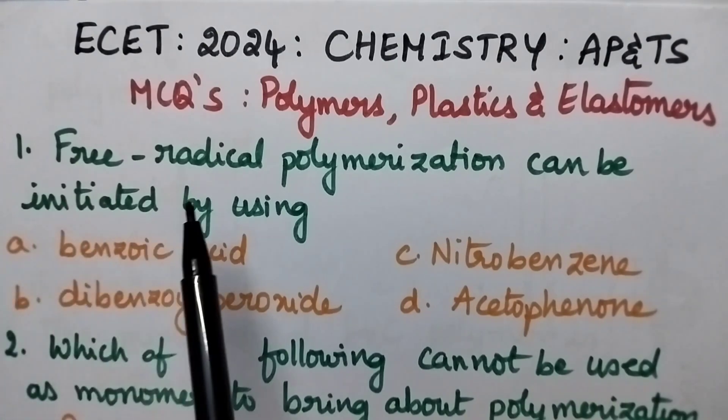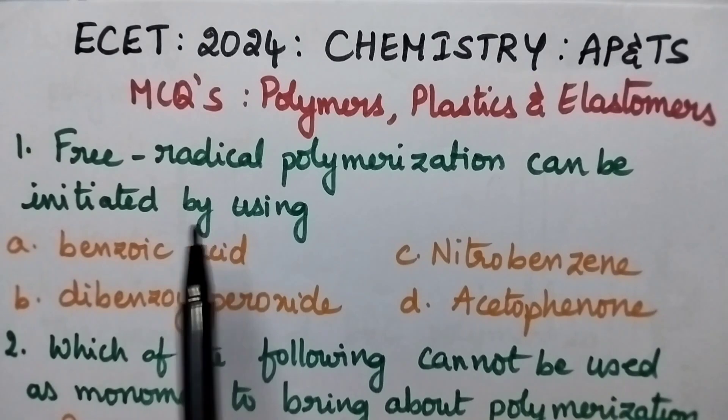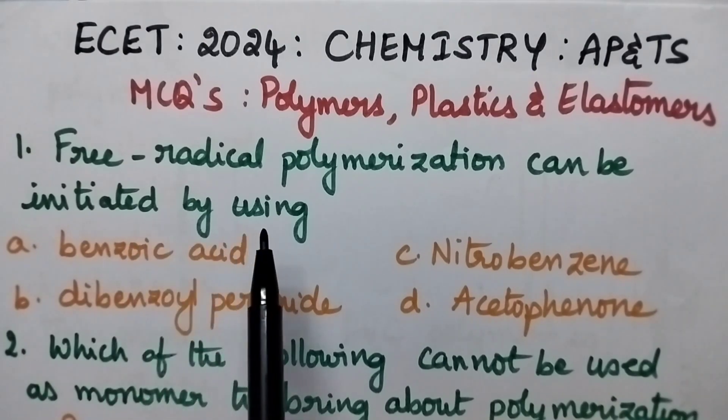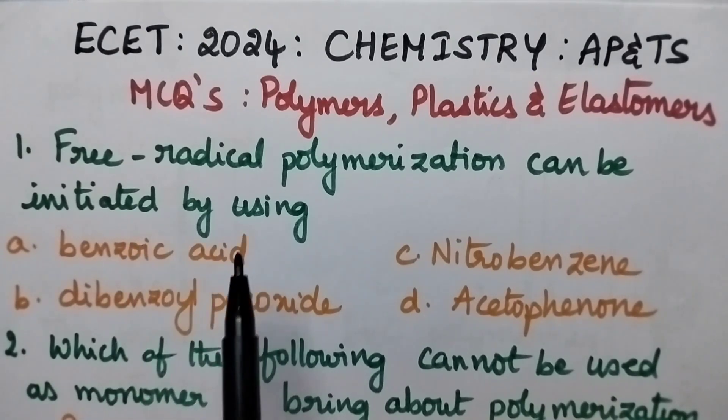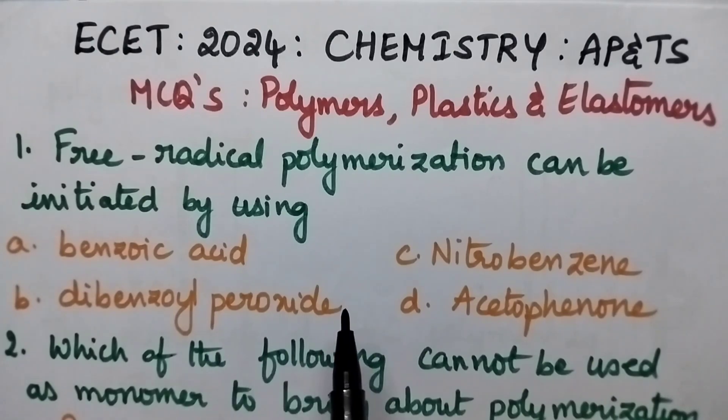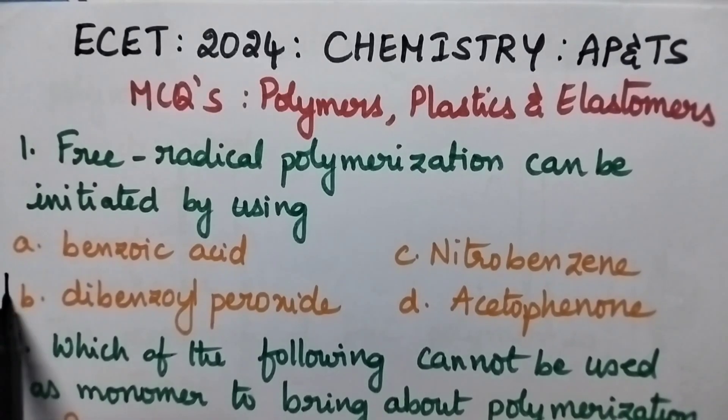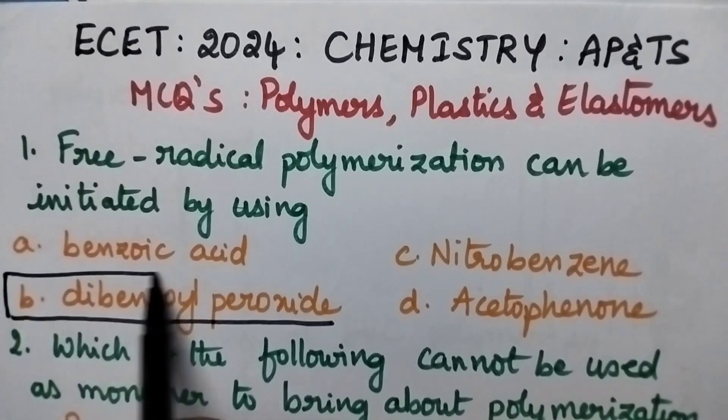Coming to the first question, free radical polymerization can be initiated by using. Free radical polymerization is one of the type of addition polymerization and which can be initiated by using peroxide as the catalyst. So coming to the given options, A. Benzoic acid, B. Dibenzoyl peroxide, C. Nitrobenzene and D. Acetophenone. So option B. Dibenzoyl peroxide is the right answer.